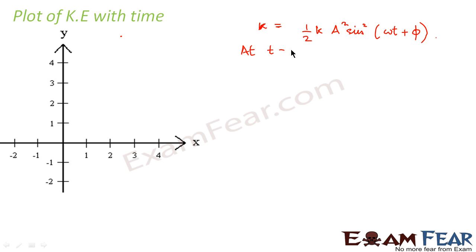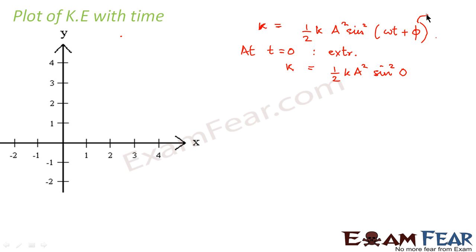Let us calculate kinetic energy at t equals zero, the initial position. The motion always starts at the extreme position because the object cannot start from the mean position — at mean position there is no external force. Whenever there is an external force, it takes the object from mean position to an extreme position and then releases it. So at t equals zero, the object is always at the extreme position, and kinetic energy becomes half k a squared times sine squared(0) equals zero. Assuming phi equals zero, the initial phase is zero, so kinetic energy is zero at t equals zero.